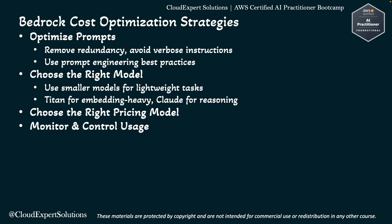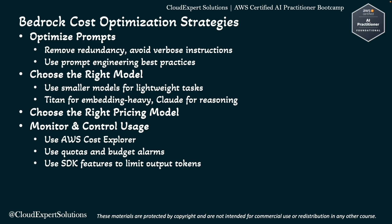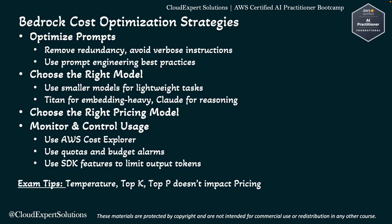Last but not least, monitoring and budgeting: use AWS Cost Explorer to track token usage and set budgets or usage alarms to avoid surprises. You can also use SDK features to limit output tokens. For this certification, remember that adjusting a model's temperature, top-K, and top-P does not impact pricing. During the certification, you will likely encounter a question where AWS tries to trick you into thinking model pricing depends on temperature, top-P, and top-K values.